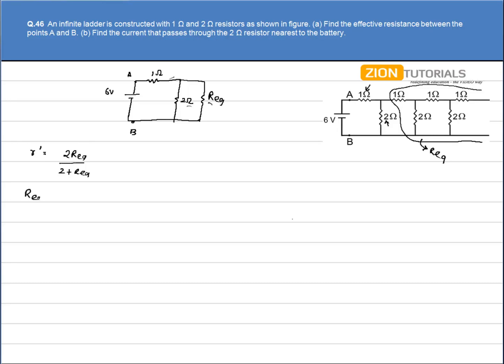So I can write R equivalent because the net resistance will be equal to R equivalent. So I have R equivalent equal to 2 times R equivalent divided by 2 plus R equivalent plus 1. So on solving this equation, I will get a quadratic equation and we will calculate the quadratic equation first.